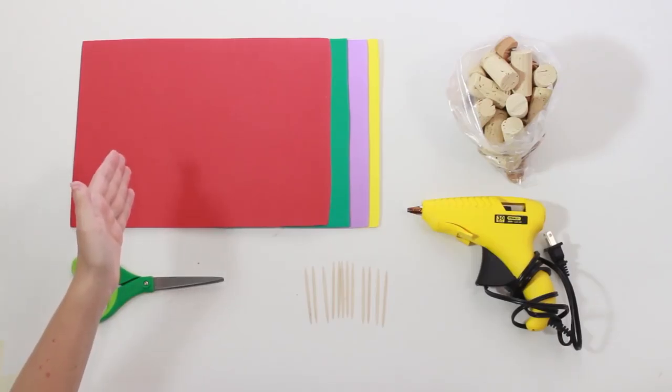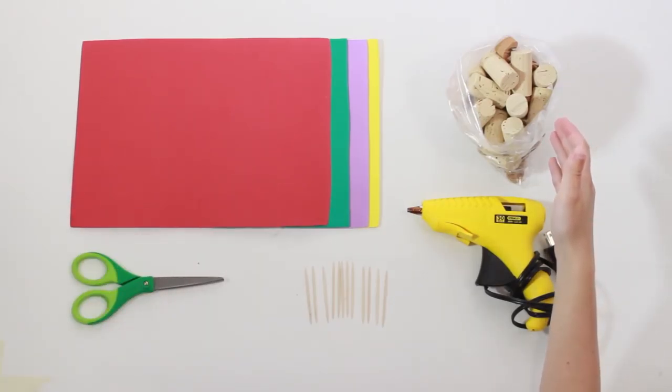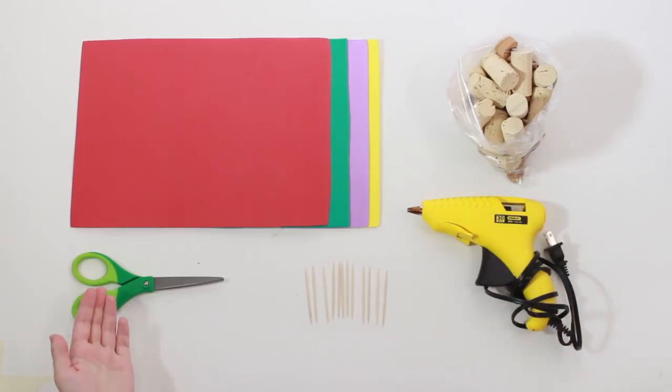Clever Brand Fun Foam, Clever Brand Assorted Crafting Cork. We'll provide the links to those items at the end of the video. Scissors, a glue gun, and toothpicks.